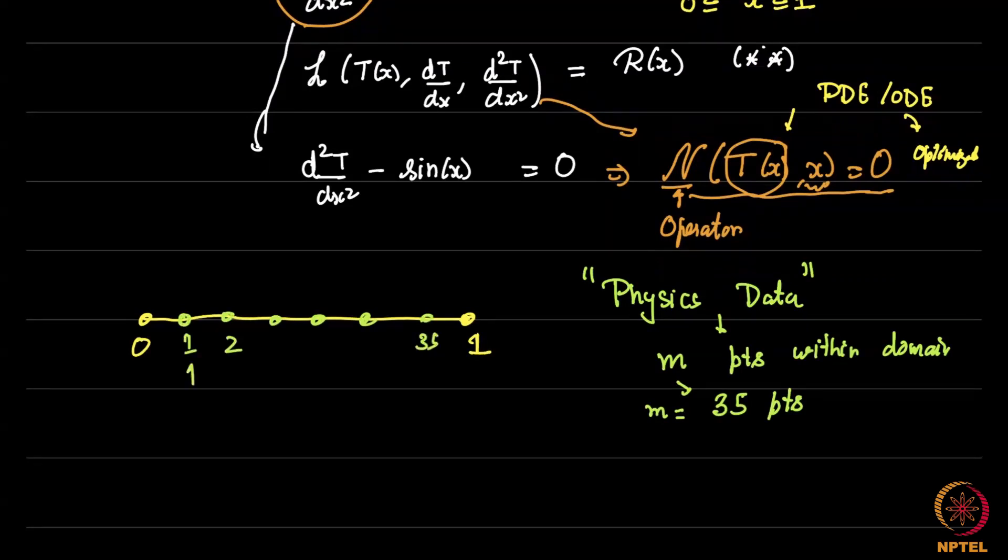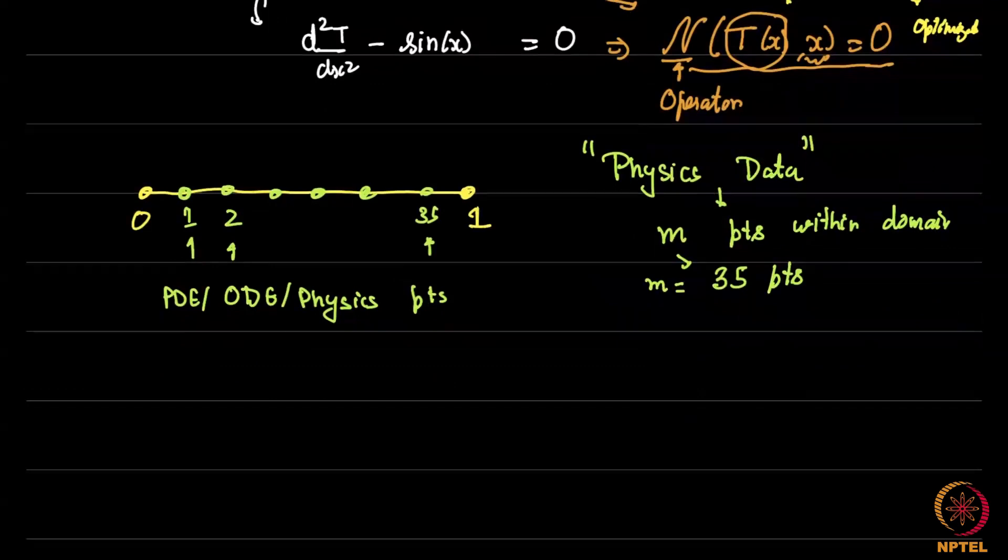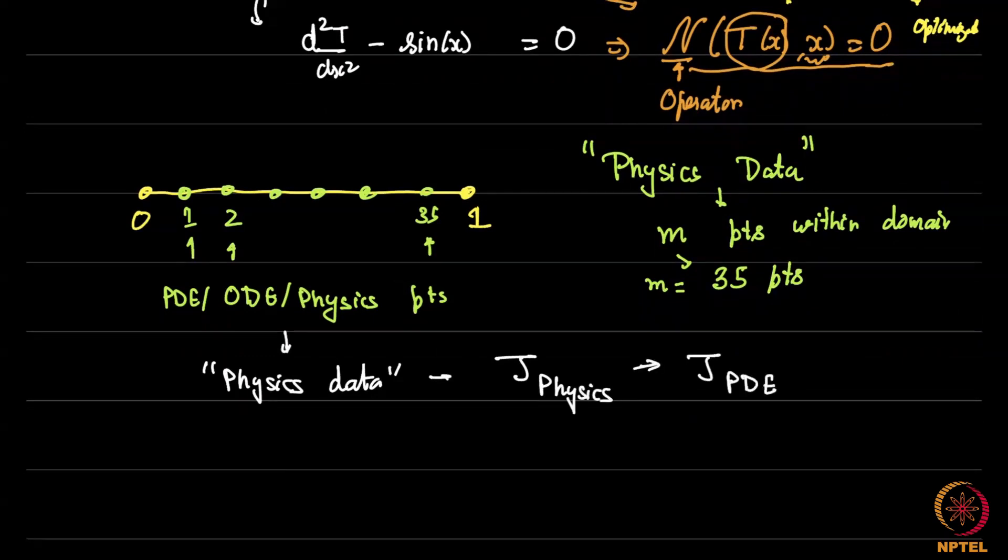Now at these 35, these we will call the ODE or the physics points. Or if it is a PDE, we will call it the PDE points. So these points serve only one purpose. We are going to take the physics data from here and that is going to go into the loss function as J_physics or typically in the literature we call it J_PDE or J_ODE or J_differential equation. So let us just call it J_PDE here. So just I am going to call it J_PDE although this is actually an ordinary differential equation. So what is J_PDE?